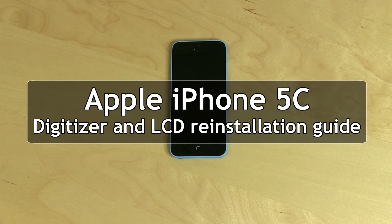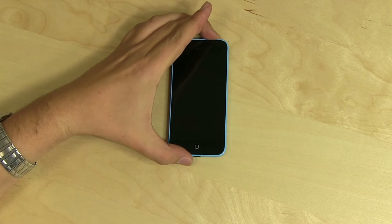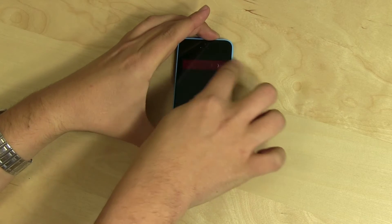This is a guide on replacing the touchscreen glass digitizer and LCD screen on an Apple iPhone 5C. To begin, turn the phone off by holding the power button at the top and confirming the shutdown on screen.